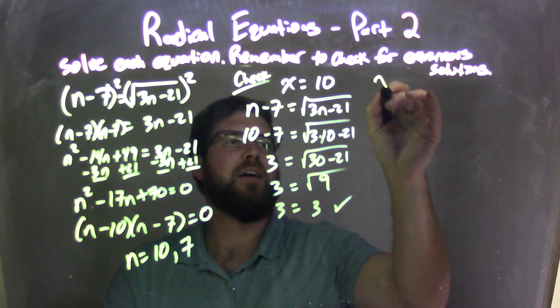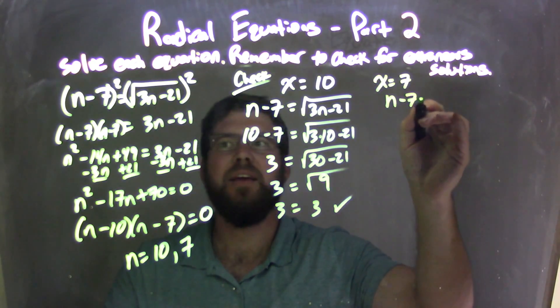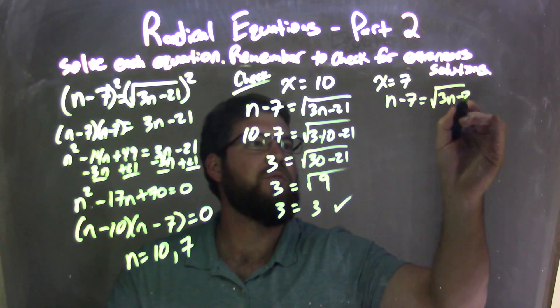But let's try the other one. We have x equals 7 is the other one we need to check. n minus 7 equals the square root of 3n minus 21.